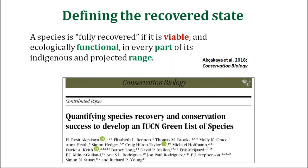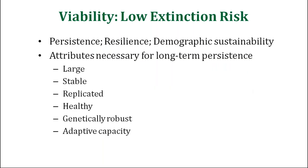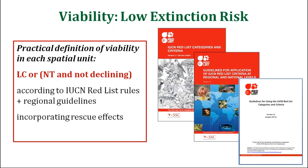Viable — also meaning persistence, resilience, and demographic sustainability — refers to the attributes necessary for long-term persistence: populations that are large, stable, replicated, healthy, etc. For viability, we decided on a very practical definition: the species in each spatial unit should be either least concerned or near threatened and not declining, based on the IUCN red list regional guidelines including rescue effects. This provides a link with the red list as well as making assessments much faster because all species have already been assessed with respect to these criteria.